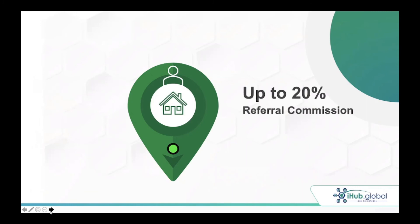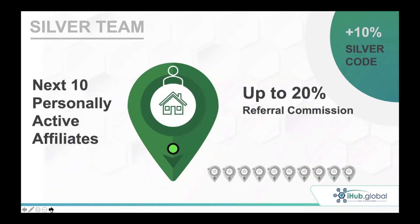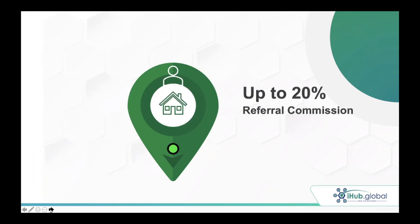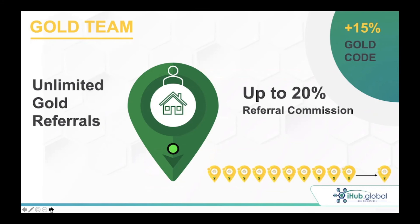After Bronze, you move on to your Silver team — the next 10 slots. You get up to 20% referral commission plus a 10% Silver code, so you're up to 30% on all 10 of these personal referrals. Then your Gold team starts with your 26th referral and has unlimited slots — 100, 200, or whatever you want. You make up to 20% referral commission plus a 15% Gold code, so you're up to 35% on all your Gold team personals. There's always a race to Gold.